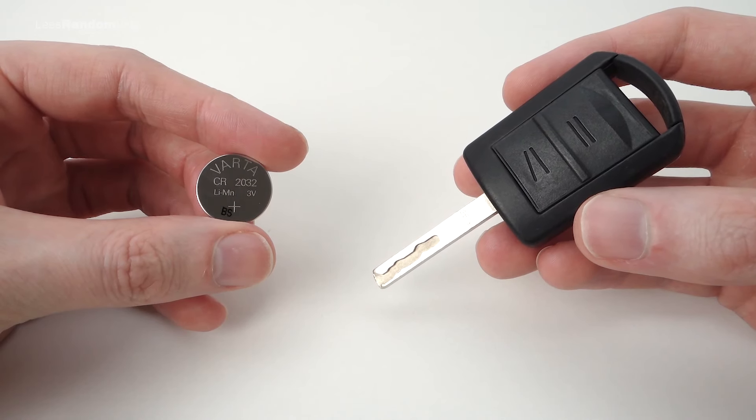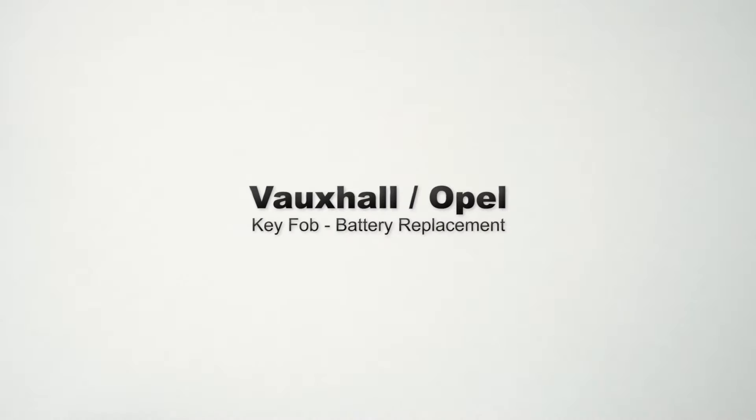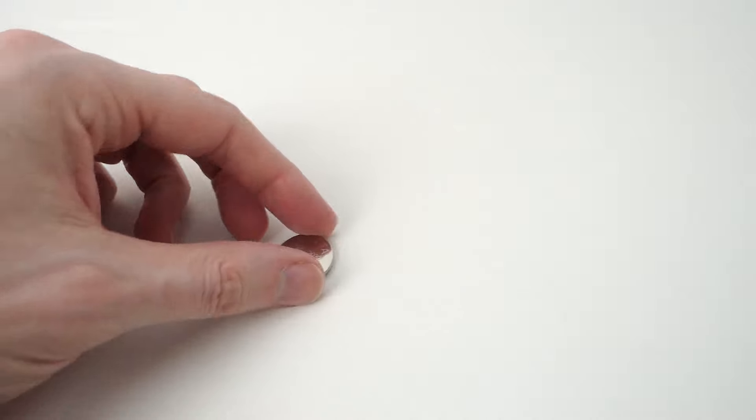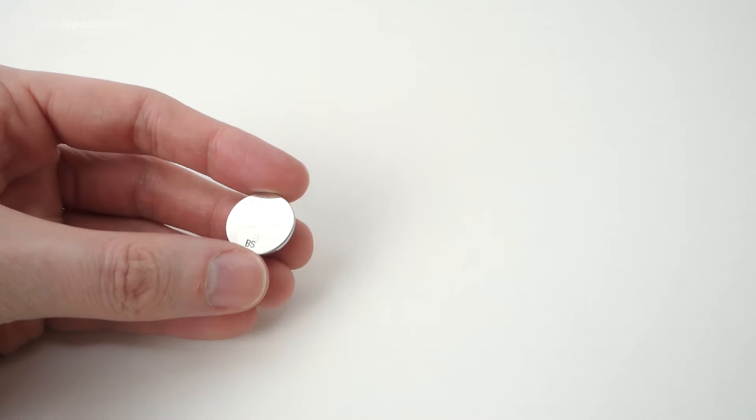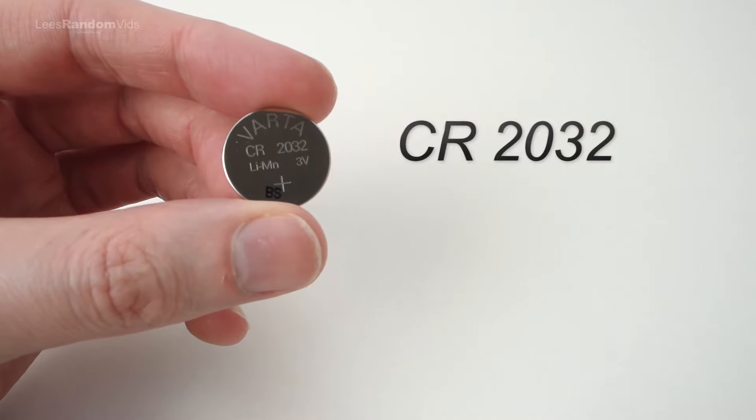In this video I'm going to show you how to change the battery in a Vauxhall or Opel key fob. The first thing you need to do is buy a replacement battery. The battery you need is called a CR2032, a coin-style 3V battery.